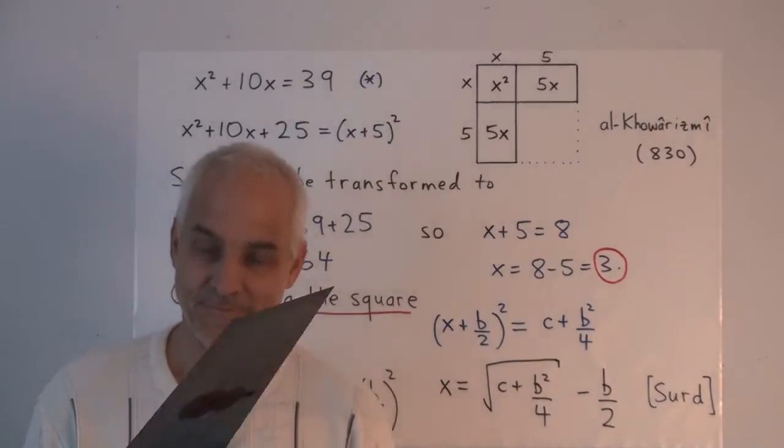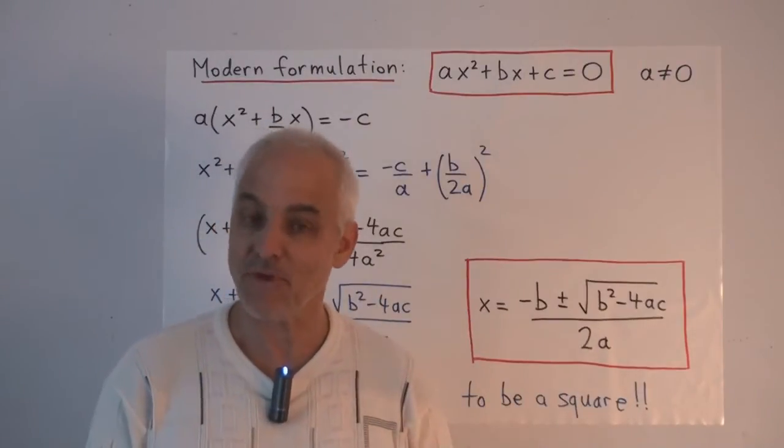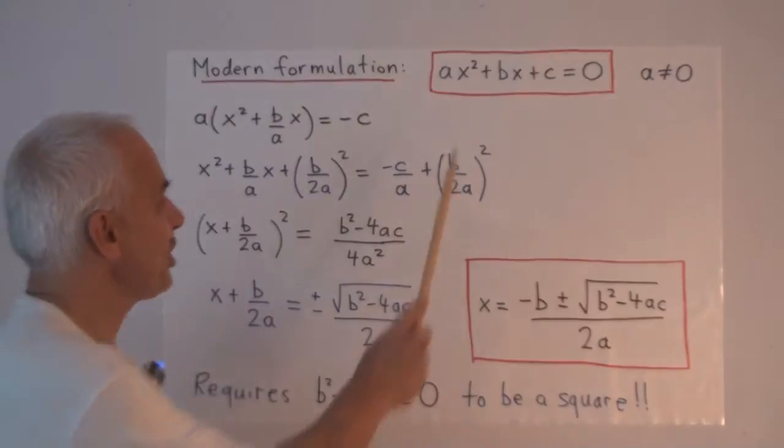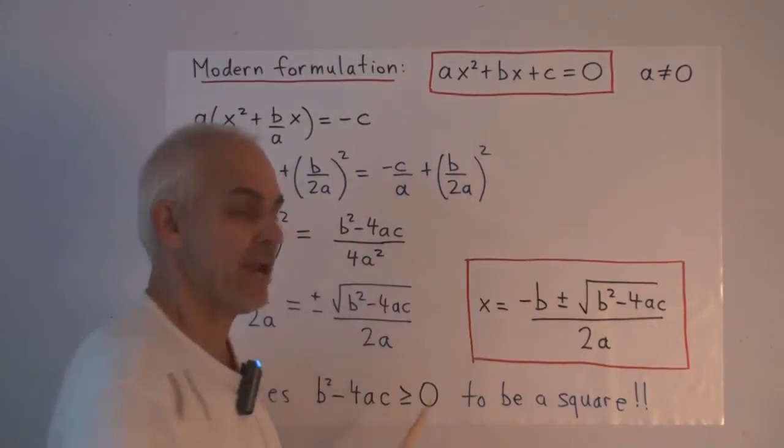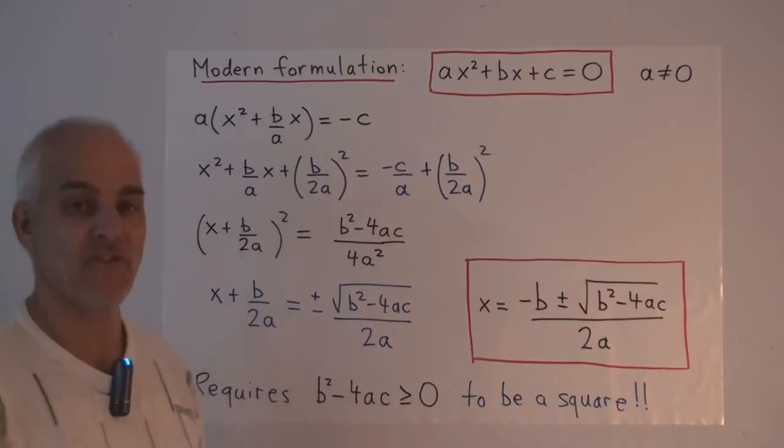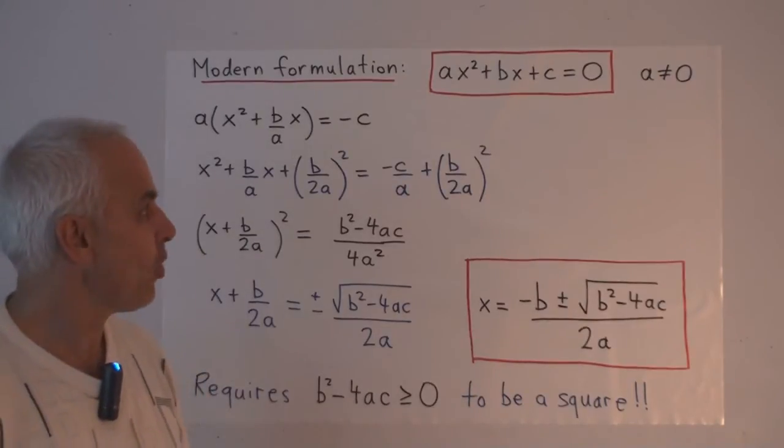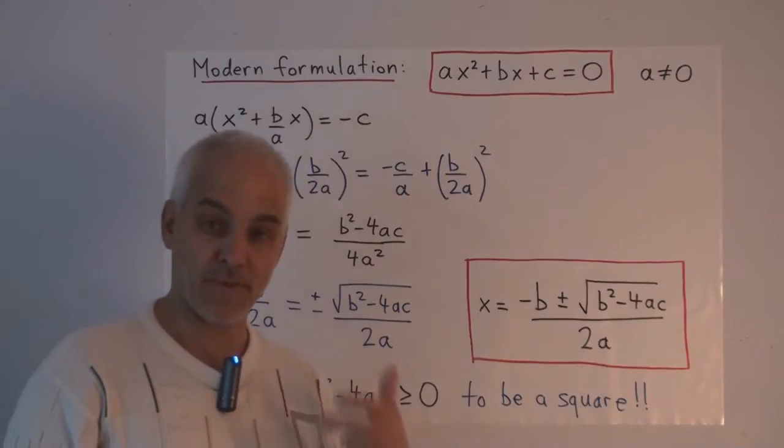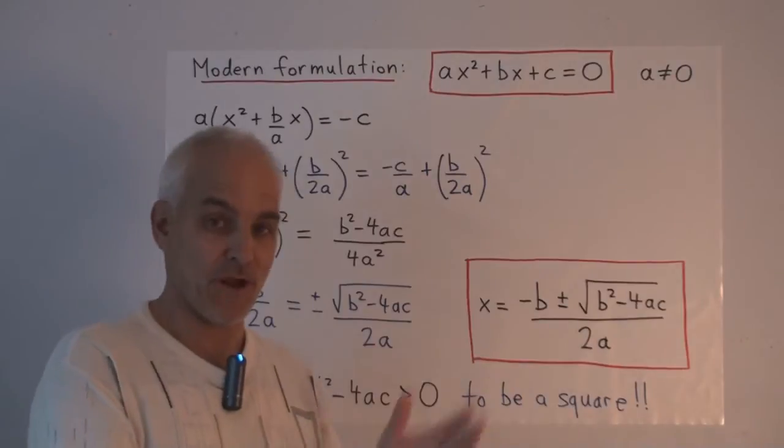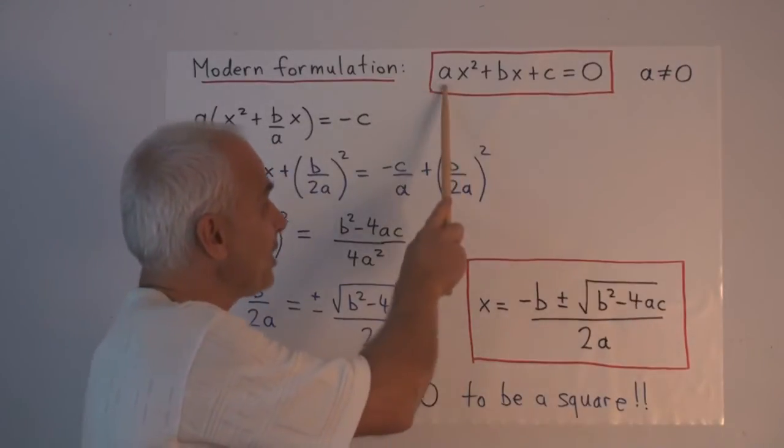So here's the modern way of rewriting what al-Khwarizmi did in that previous example. Usually today we think about a quadratic equation in this form: ax squared plus bx plus c equals 0, where a, b, and c are three specific given numbers and x is an unknown number that we're trying to find.